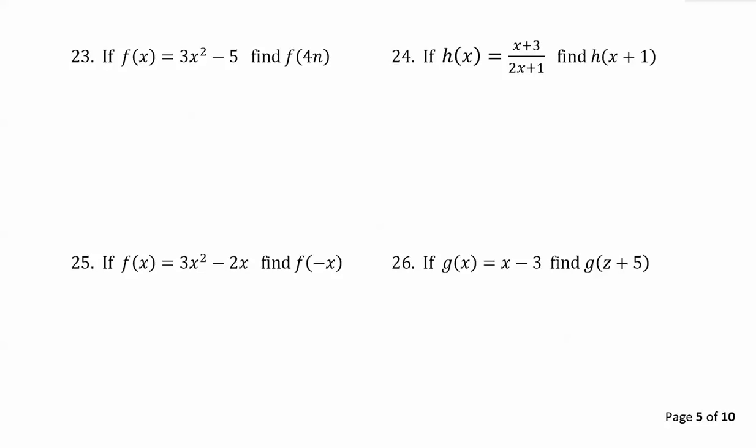For these next four examples we're going to evaluate functions where we have variable expressions. If f of x is equal to 3x squared minus 5, find f of 4n.